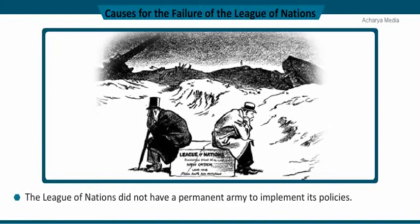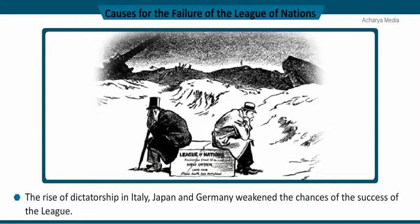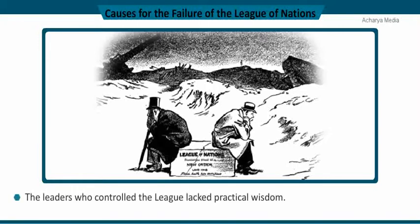The League of Nations did not have a permanent army of its own to implement its policies. The rise of dictatorship in Italy, Japan, and Germany weakened the chances of the League's success. The leaders who controlled the League lacked practical wisdom — their approach was outdated, and some called it the Geneva Conference of Fools.